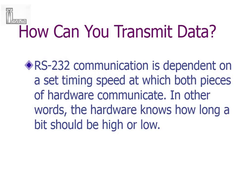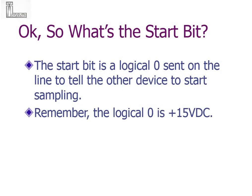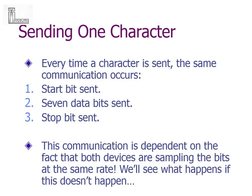How do you transmit data? RS-232 communication is dependent on a set timing speed at which both parties communicate — like if one person speaks very fast, the other may not catch it, so the speeds have to match. There is something called a start bit: a logical zero sent on the line to tell the other device to start sampling. The start bit is a logical zero (plus 15V). Every time a character is sent, a start bit is sent, then 7 or 8 bits of data, then a stop bit.